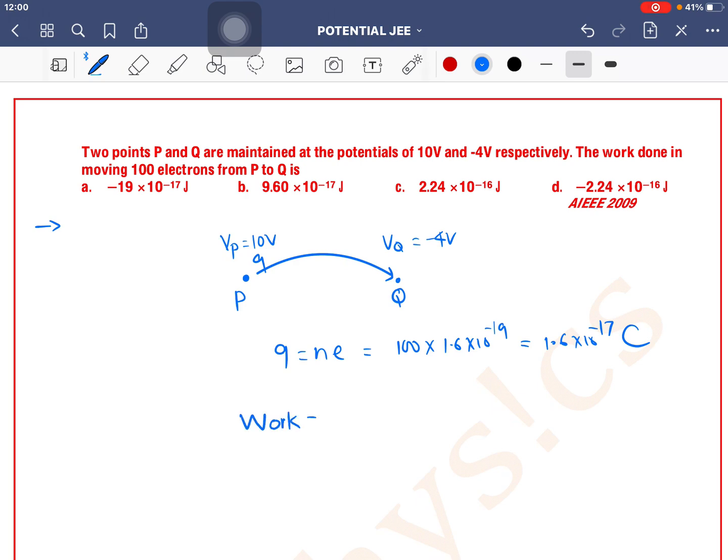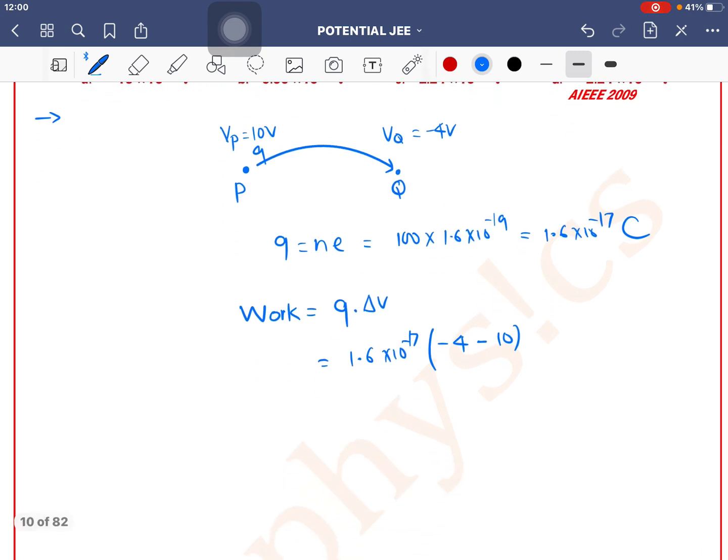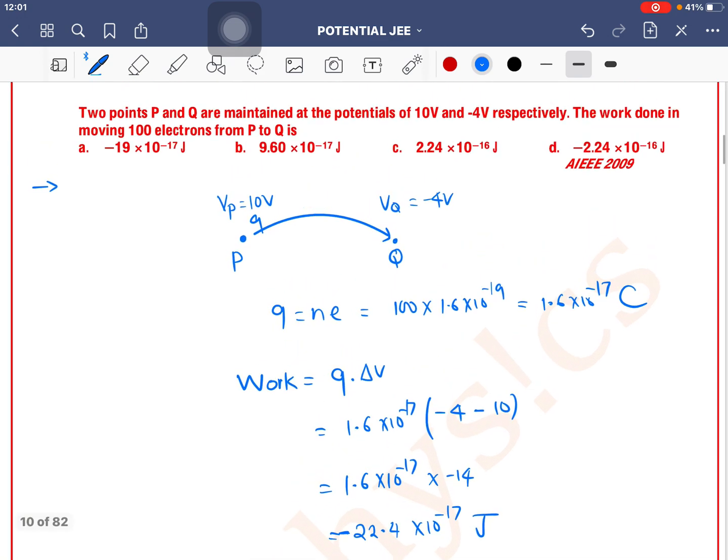So you're asked what is the work? The work formula in terms of potential difference is q into delta V. So q is 1.6 into 10 to the power minus 17 and delta V is V final, that is minus 4, minus V initial 10. So here it becomes 1.6 into 10 to the power minus 17 into minus 14. So here 1.6 into 14 is 22.4 into 10 to the power minus 17 joule.